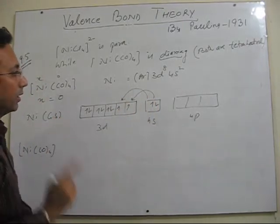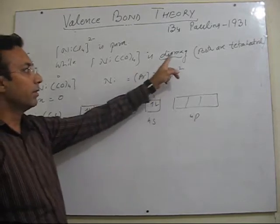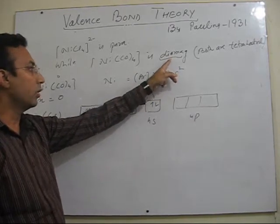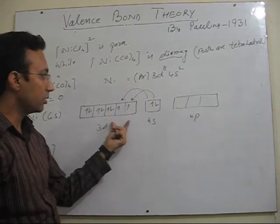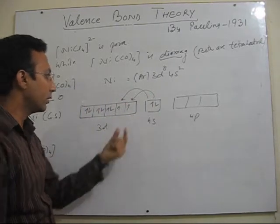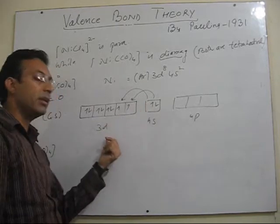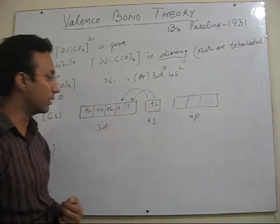So I am explaining here that magnetic behavior is given, only then we can represent any complex using VBT. Otherwise the explanation why s are pairing with the d electron is not given by valence bond theory.